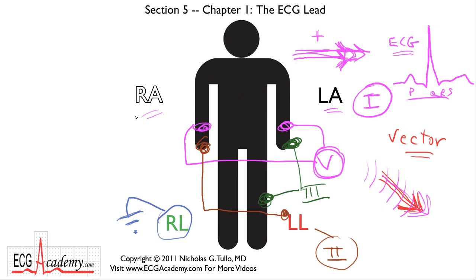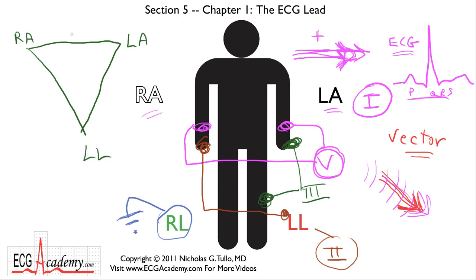One of the pioneers in electrocardiography was Einthoven, and he described Einthoven's triangle, which had a lot to do with the early leads and the way he devised how lead systems would be created. He described Lead 1 from the right arm to the left arm, Lead 2 from the right arm to the left leg, and Lead 3 from the left arm to the left leg. We'll talk more about this in the next lesson.